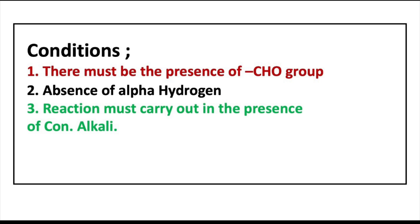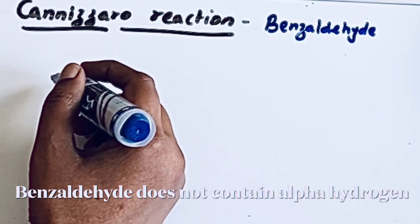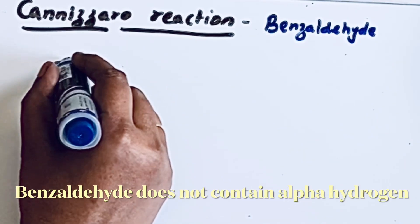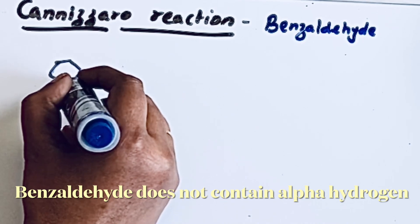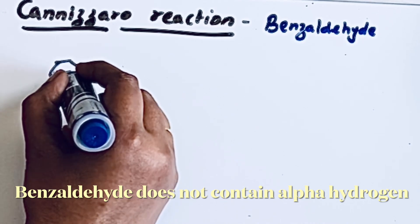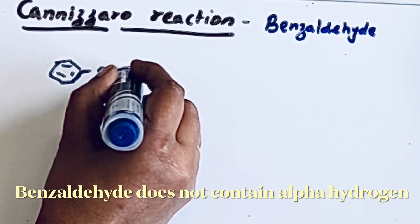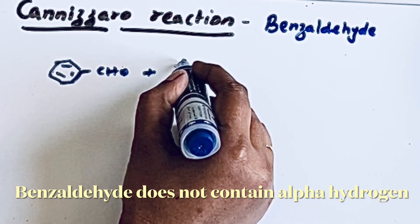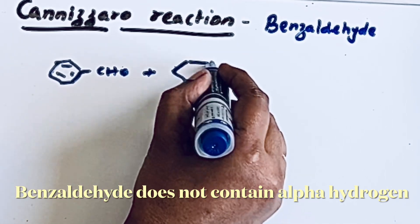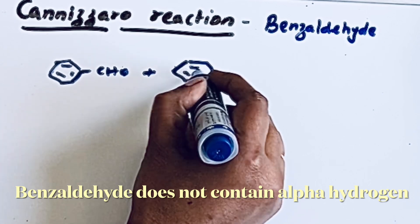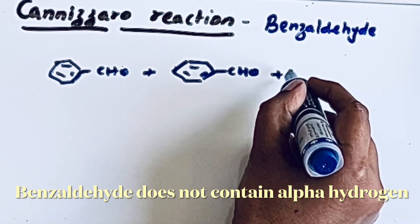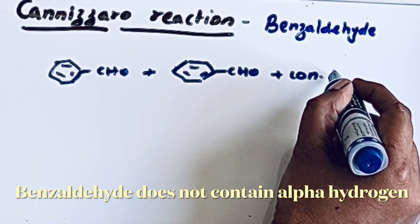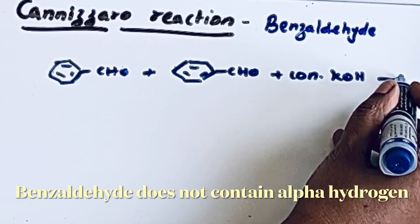The reaction must be carried out in the presence of concentrated alkali. So let us draw the benzaldehyde structure. There are two molecules of benzaldehyde involved in this reaction — CHO — and another molecule of benzaldehyde — CHO — in the presence of concentrated NaOH or KOH on heating.